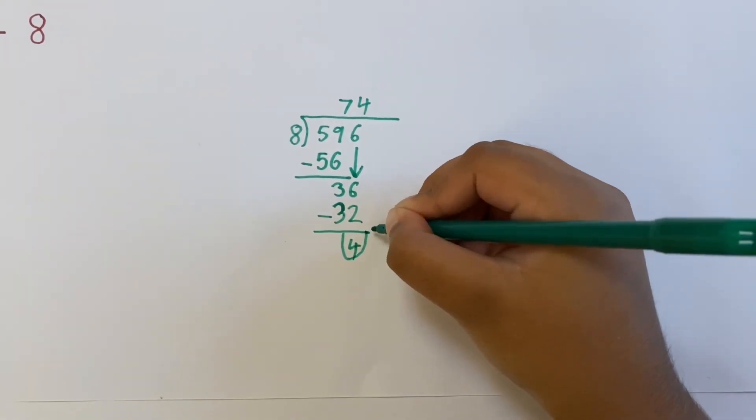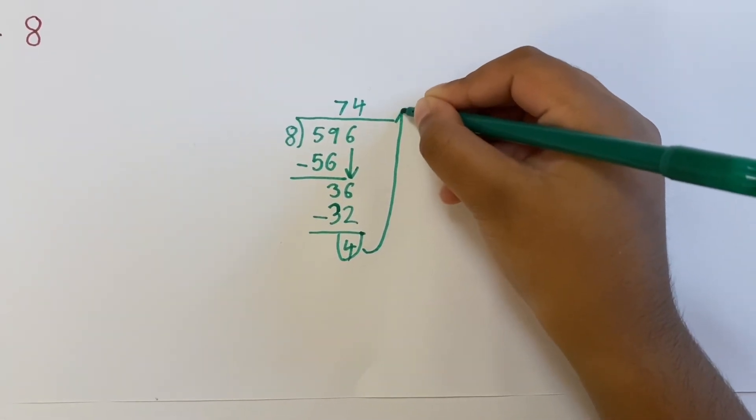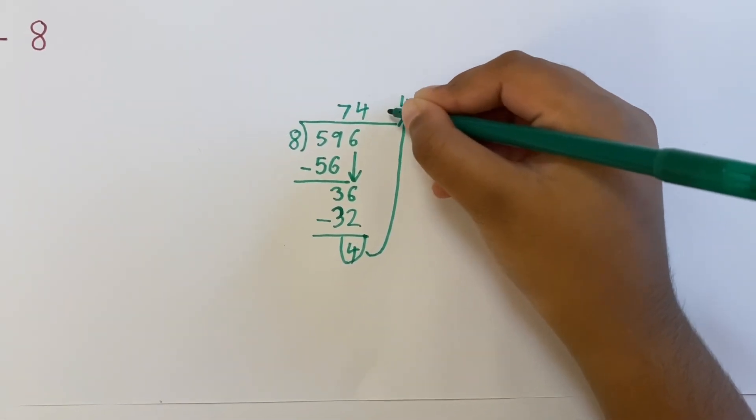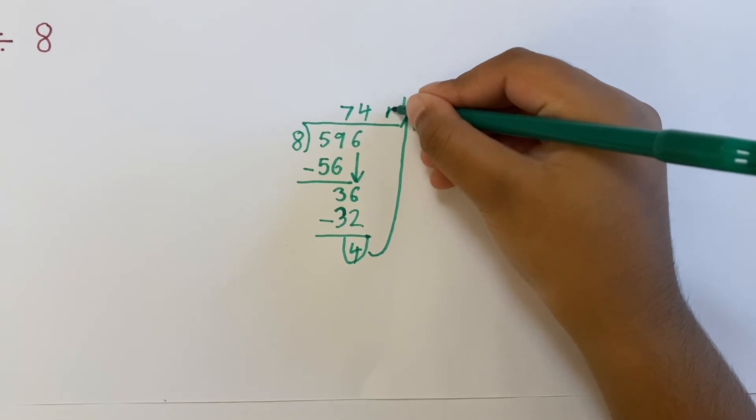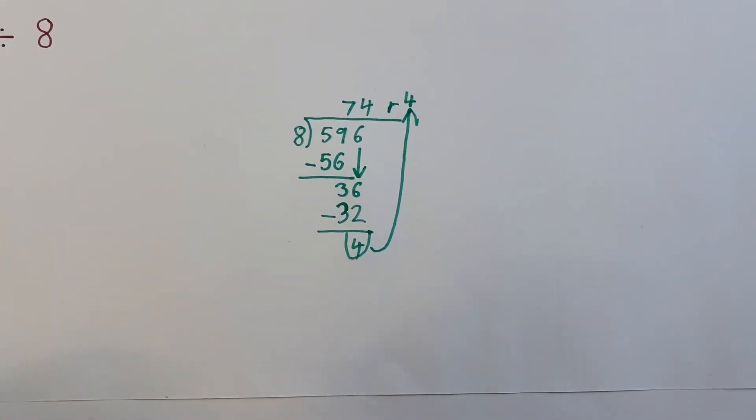Our remainder is 4. We would bring 4 up, write it here, and write the R to show the remainder.